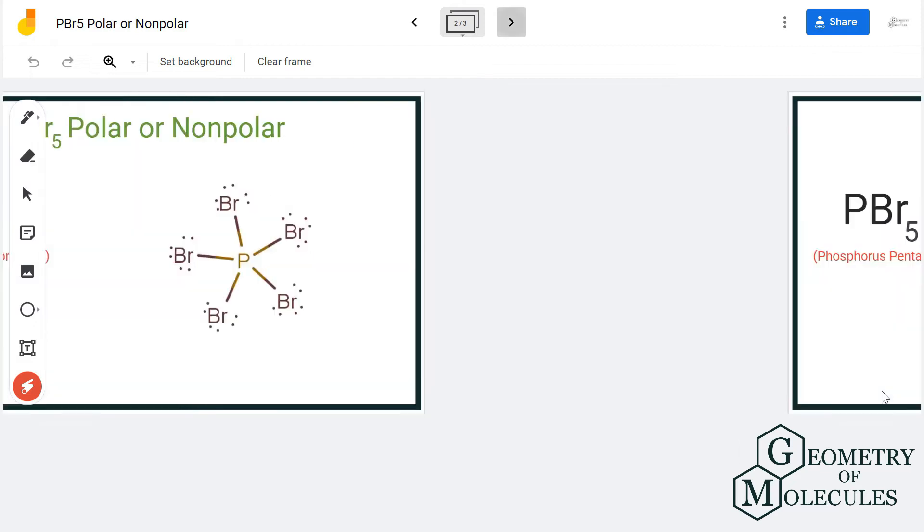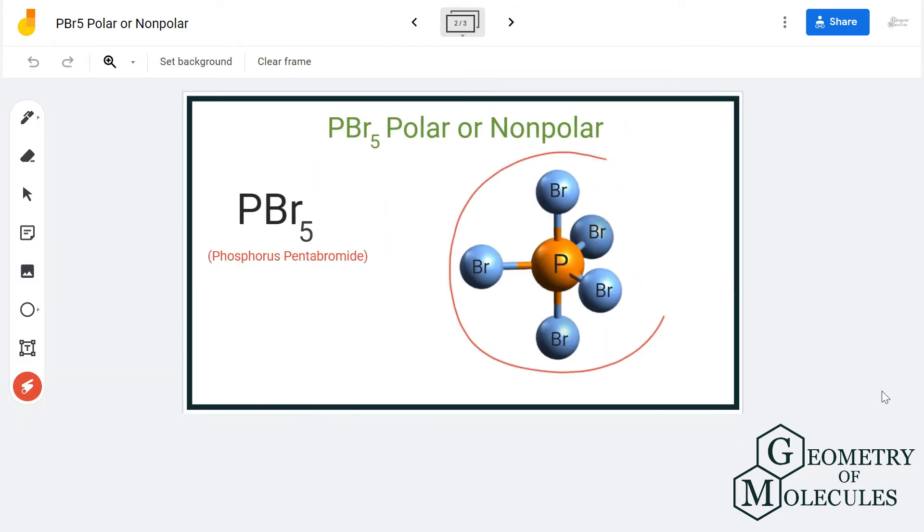To further confirm its polarity, we will also look at its shape. So here is the shape of PBr5 and it has a trigonal bipyramidal geometry and all the bromine atoms are arranged quite symmetrically and the distribution of electrons is also quite symmetric.